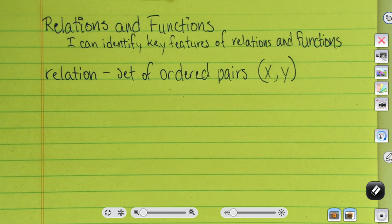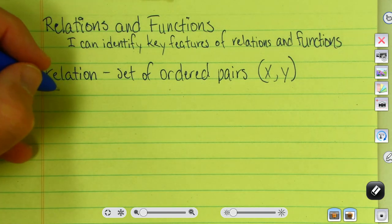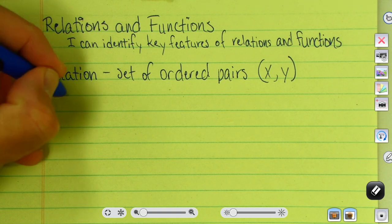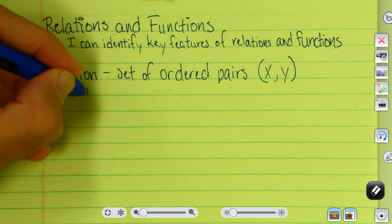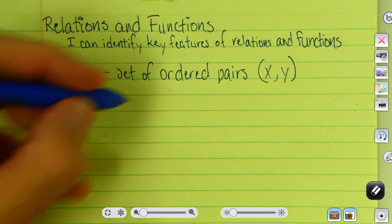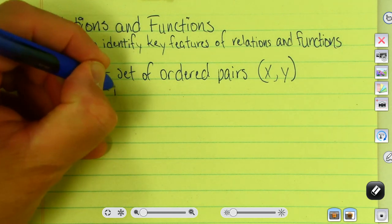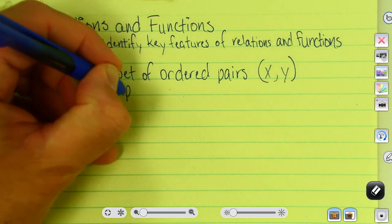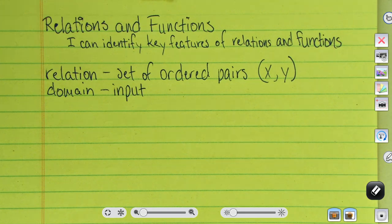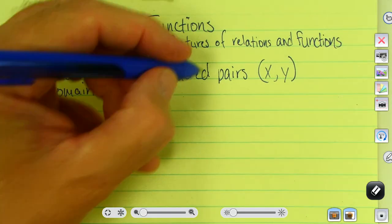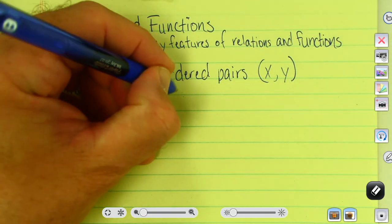In a relation, we identify two parts. We identify a domain, and the domain has a couple of names. We can call it an input. It's the first value in a relation, or the X value.